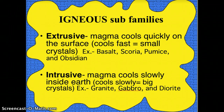There are two subgroups. One is extrusive — that's magma that cools on the surface, forming very, very small crystals. The other is intrusive — magma that cools slowly under the insulated earth, so you're going to get big crystals. There are examples of each, and you'll have to know the examples as we go through the lab and for the test.